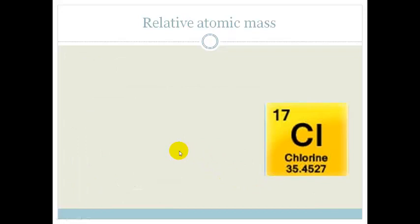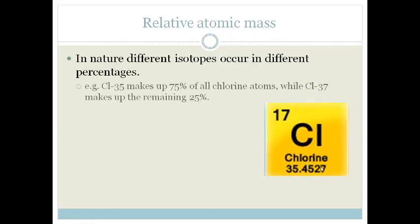What does this mean? If we look on the periodic table, we will see that we've got the big Cl for chlorine, then we've got 17, which tells us we've got 17 protons, and then you see this number here, 35.4527. And that is the relative atomic mass.